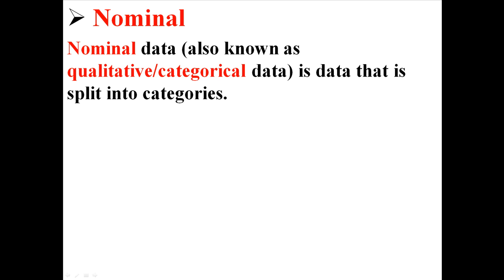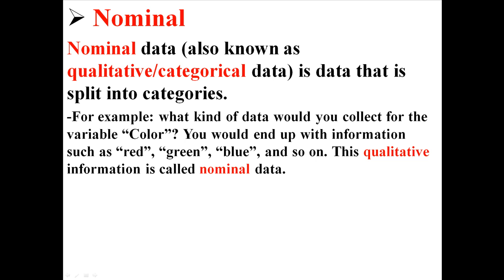First of all, there's nominal data. Nominal data, which also might be known as qualitative or categorical data, is data that is split into categories. For example, what kind of data would you collect if you were collecting data for the variable color? You would end up with information like red, green, blue, and so on. This qualitative information is called nominal data.